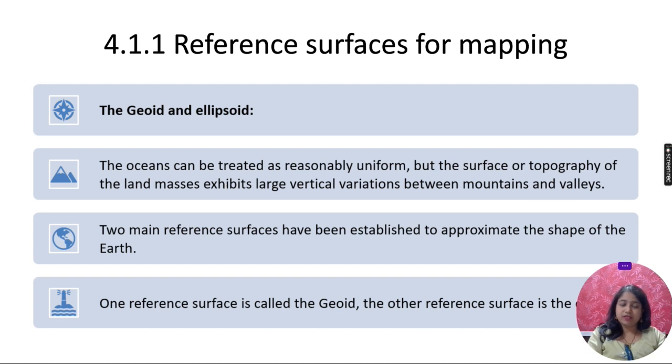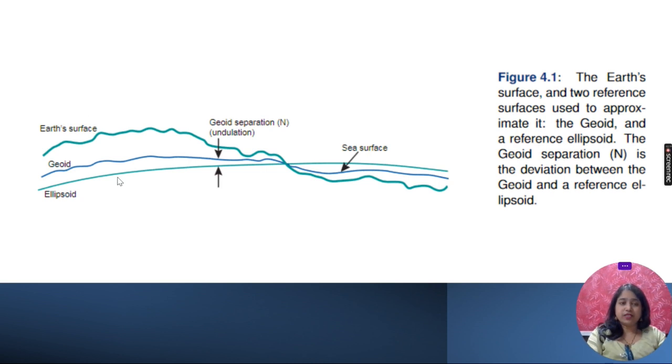For the entire world, we can use two reference surfaces for mapping: the geoid and the ellipsoid. Our earth is not uniform - it has mountains in some places and valleys in others. It is very difficult to approximate a surface for the earth because somewhere it is very high because of mountains and somewhere very low because of the deep sea. We can use two main surfaces as reference surfaces for study. The diagram shows geoid, earth surface, and ellipsoid.